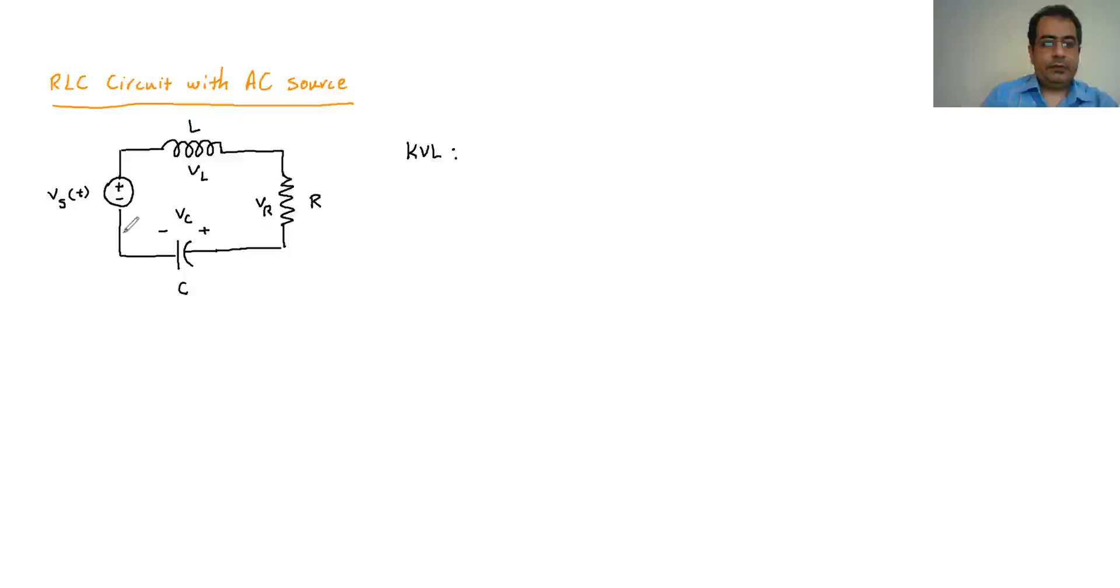So in this case, if I start from this point and rotate here, I have negative VS plus the VL plus the VR plus the VC would be zero. So if I rearrange it and take the VS to the other side, I'm gonna have the VL plus the VR plus the VC is equal to VS.